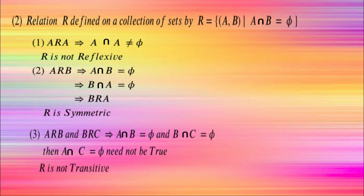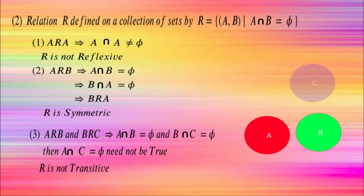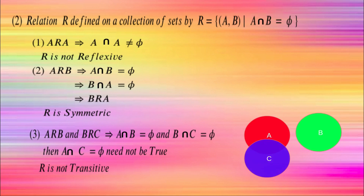For transitivity, consider three sets A, B, C. Suppose A is related to B and B is related to C. A intersection B is empty and B intersection C is empty. However, A intersection C may not be empty — A and C could have elements in common. So A intersection C equal to empty is not necessarily true, meaning A is not related to C. So it is not transitive.